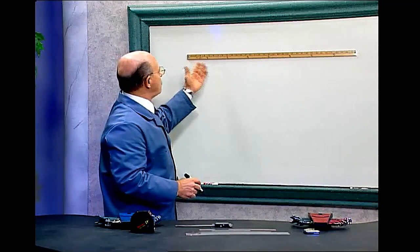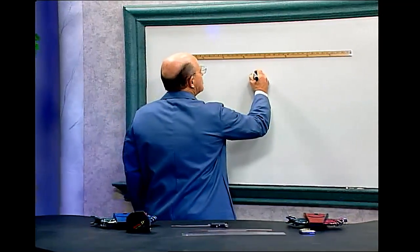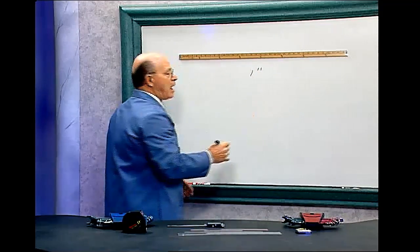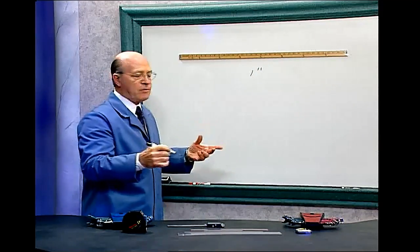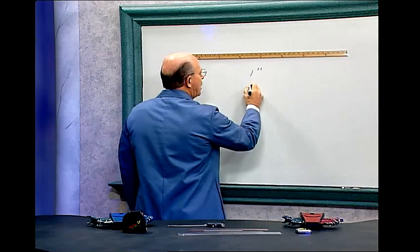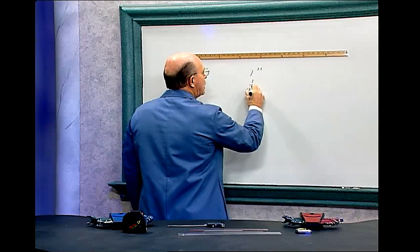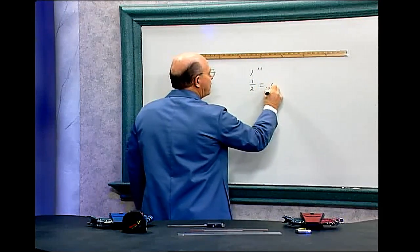Now, when you have a ruler like this, if you have one inch, one inch, and you keep on dividing it in half, divide that in half, becomes one half, and that equals point five.